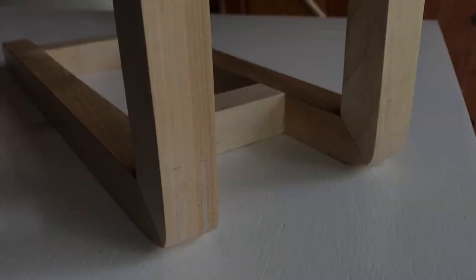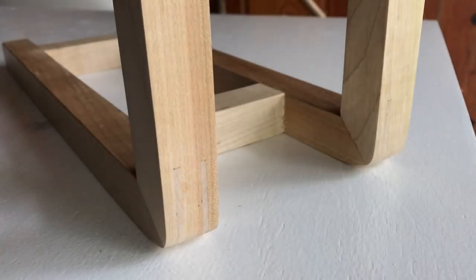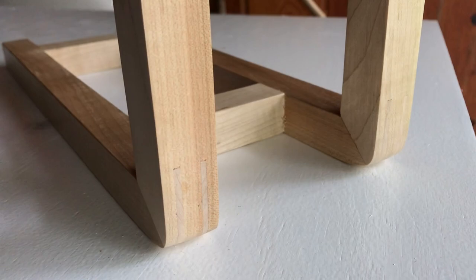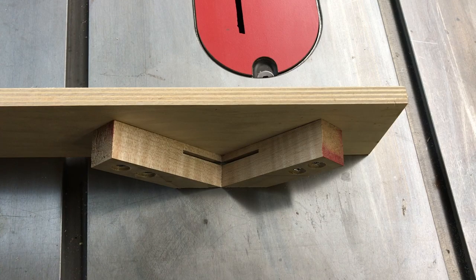Since miters can be inherently weak unless reinforced, I decided to add splines. To do this, I'm using a jig made from miter offcuts and a half-inch scrap of plywood.